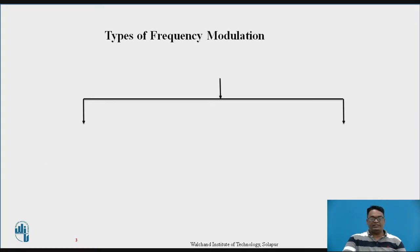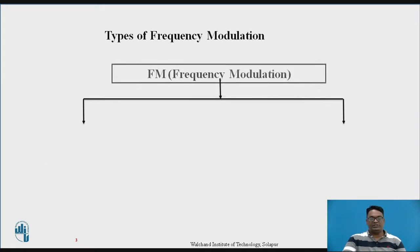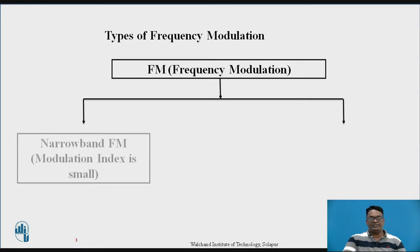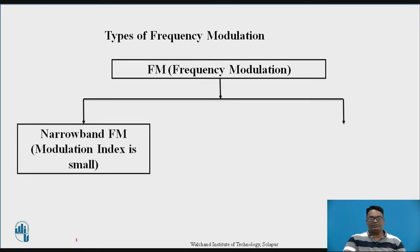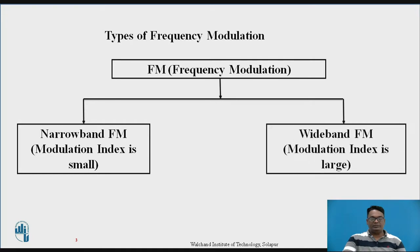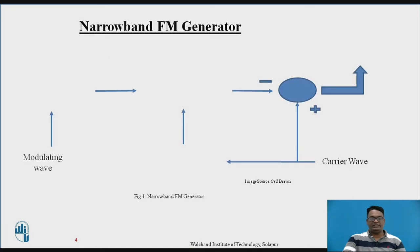So basically there are different types of modulation. The frequency modulation is divided into two types. First one is the narrow band where modulation index is small, and second one is the wide band where modulation index is large. So how is a narrow band generated? This block diagram will give you an idea of how a narrow band is generated in an FM generator.